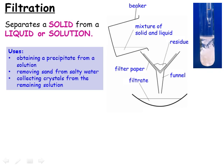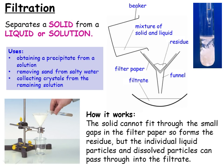The mixture is poured into a funnel containing a filter paper. The solid residue remains in the filter paper, while the liquid filtrate passes through the filter paper to be collected separately. Because of the attractive forces between the solid particles, they form pieces of solid material which are too large to pass through the tiny pores in the filter paper.